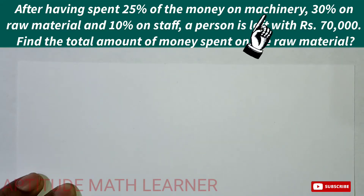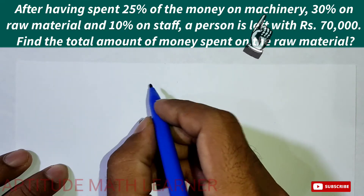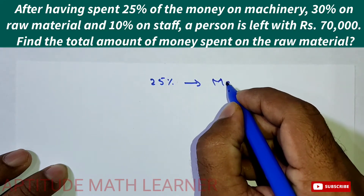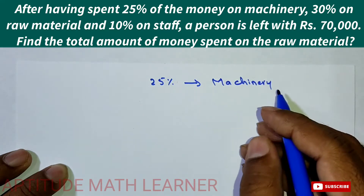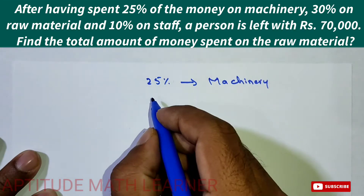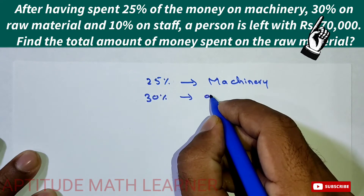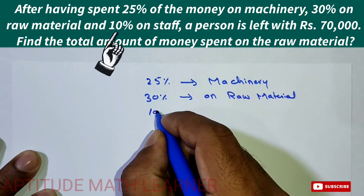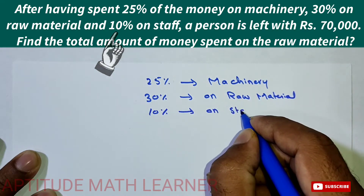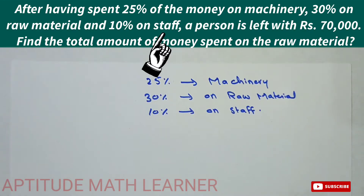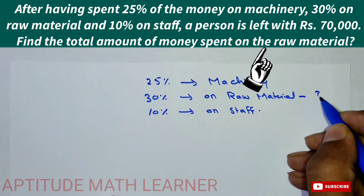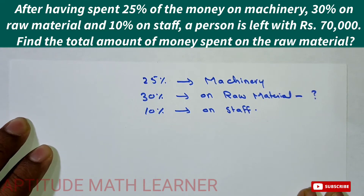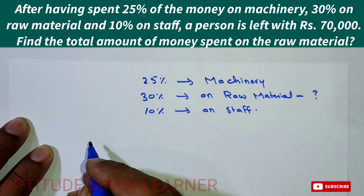From the total amount, he spent 25% on machinery, 30% on raw material, and 10% on staff. To find the amount spent on raw material, we first need to find his total amount. So let the total amount be x.